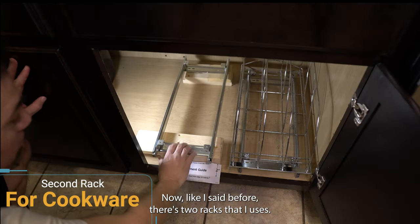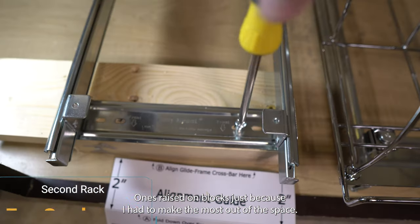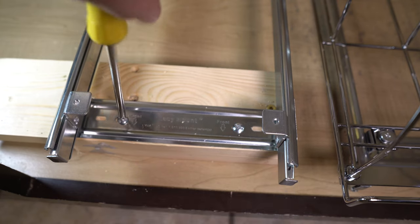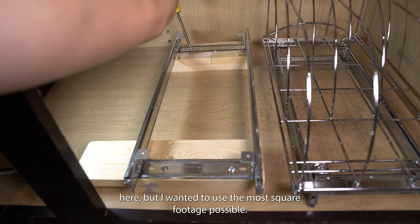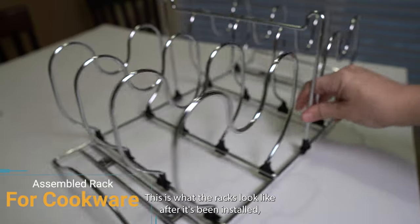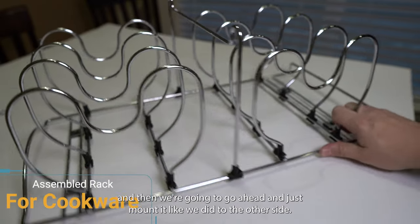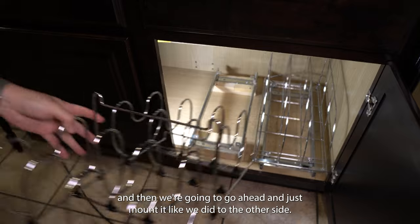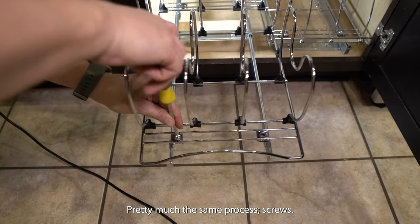Now, like I said before, there's two racks that I used. One's raised on blocks just because I had to make the most out of the space. Not going to get into the specifics here, but I wanted to use the most square footage possible. This is what the racks look like after it's been installed. And then we're going to go ahead and just mount it like we did to the other side. Pretty much same process.